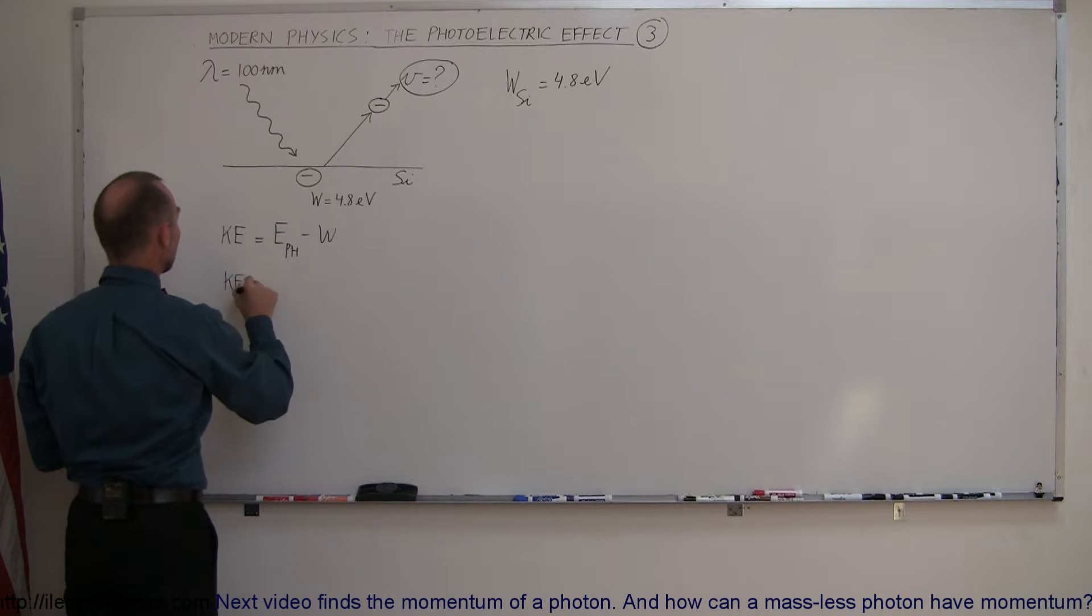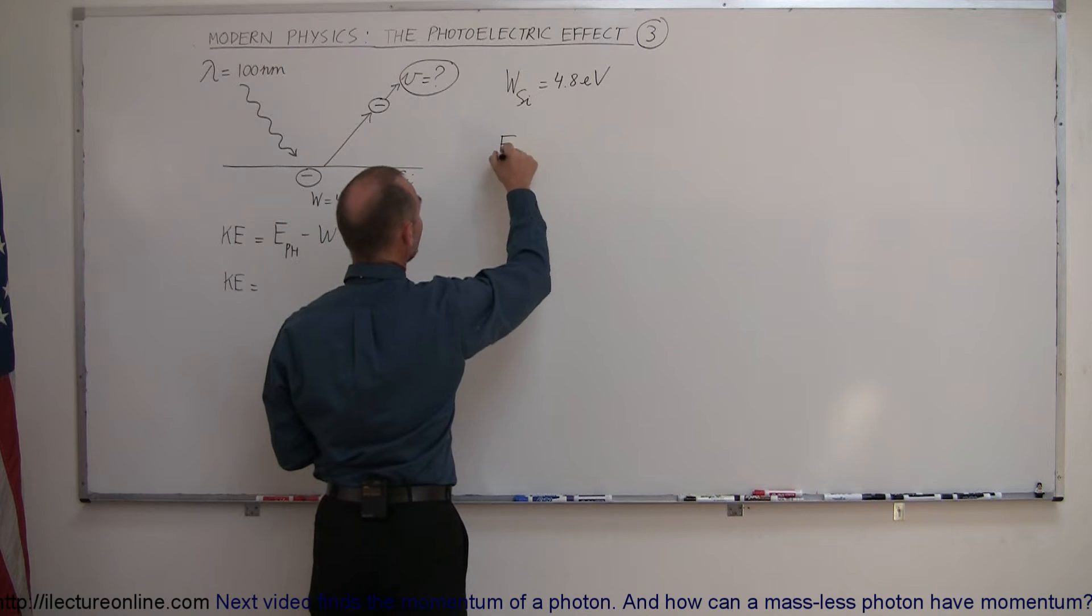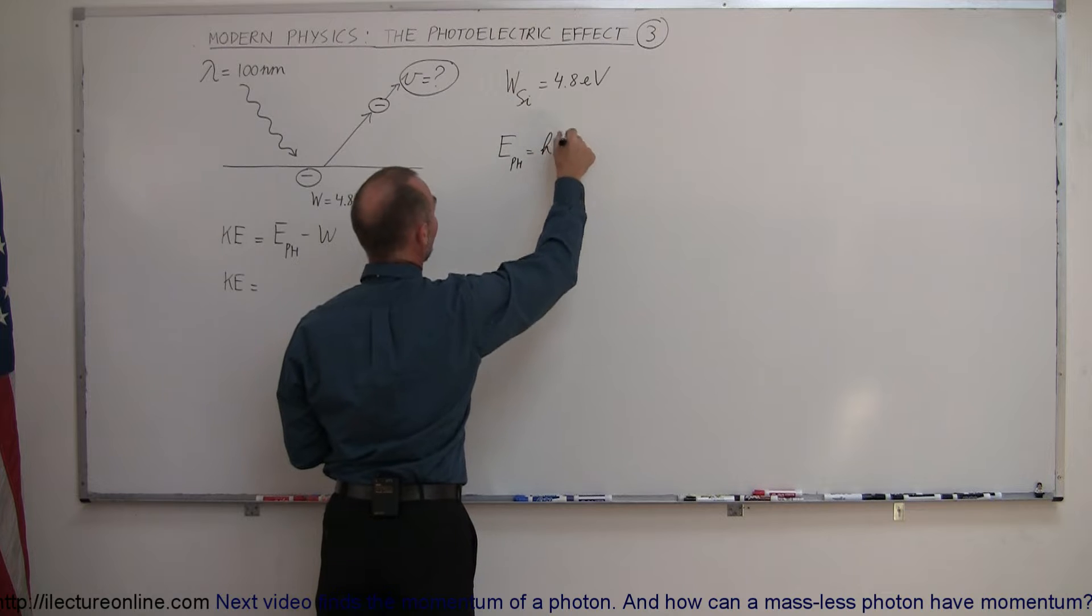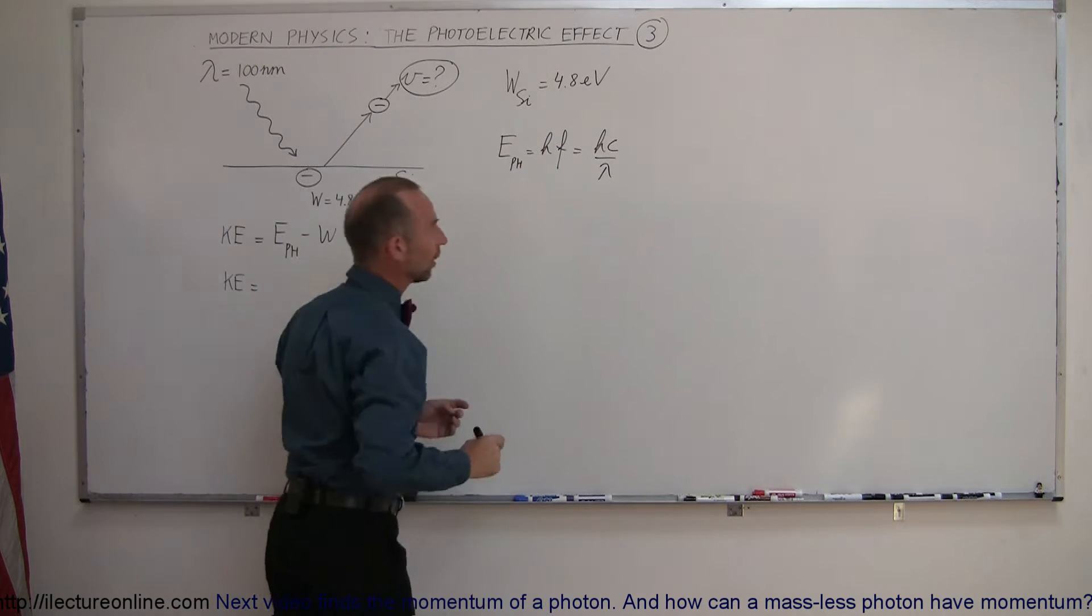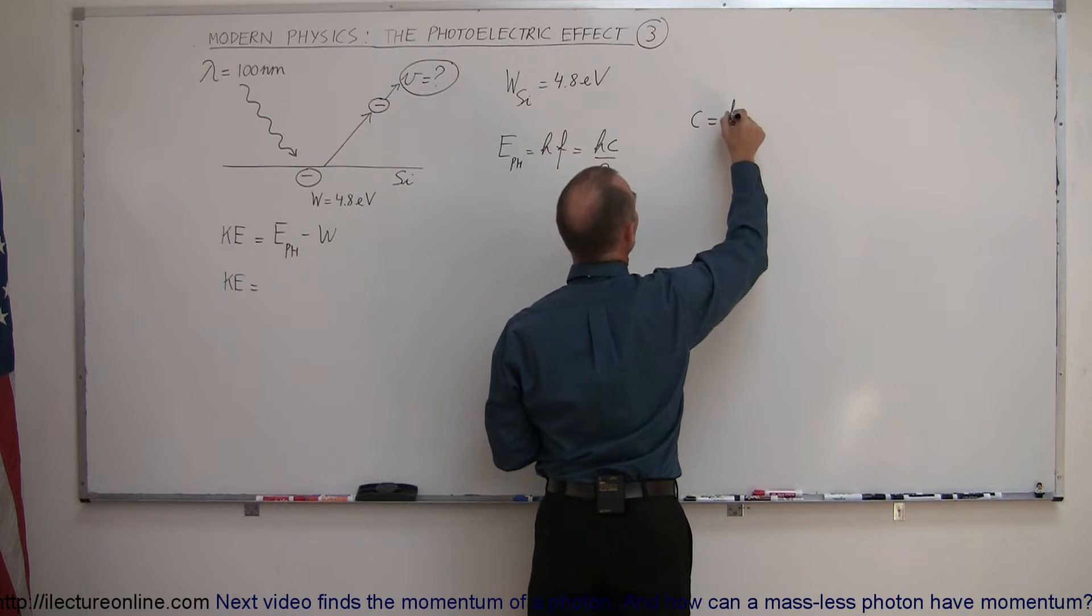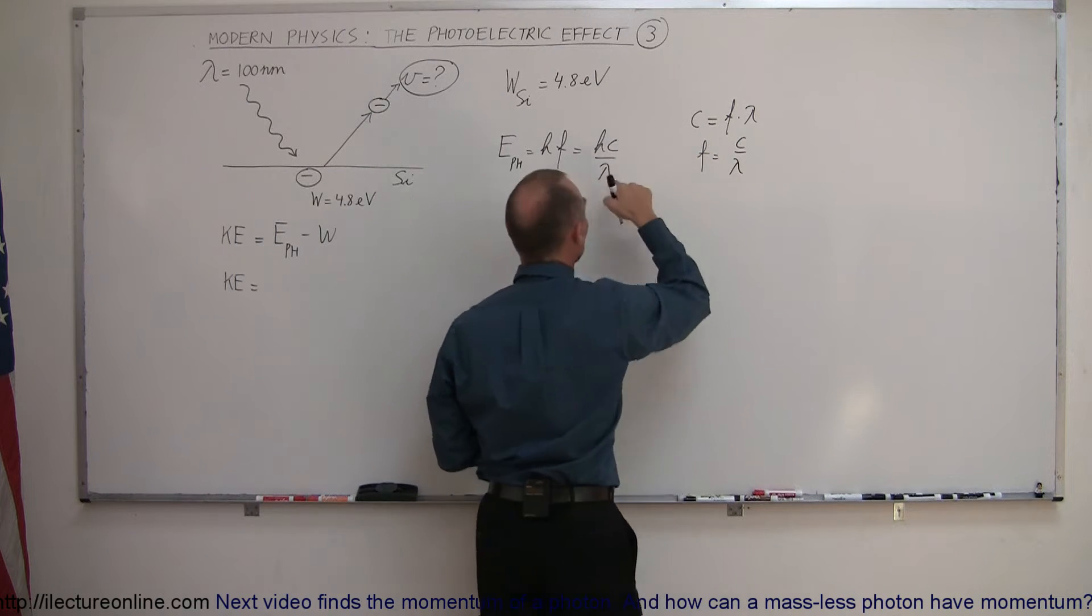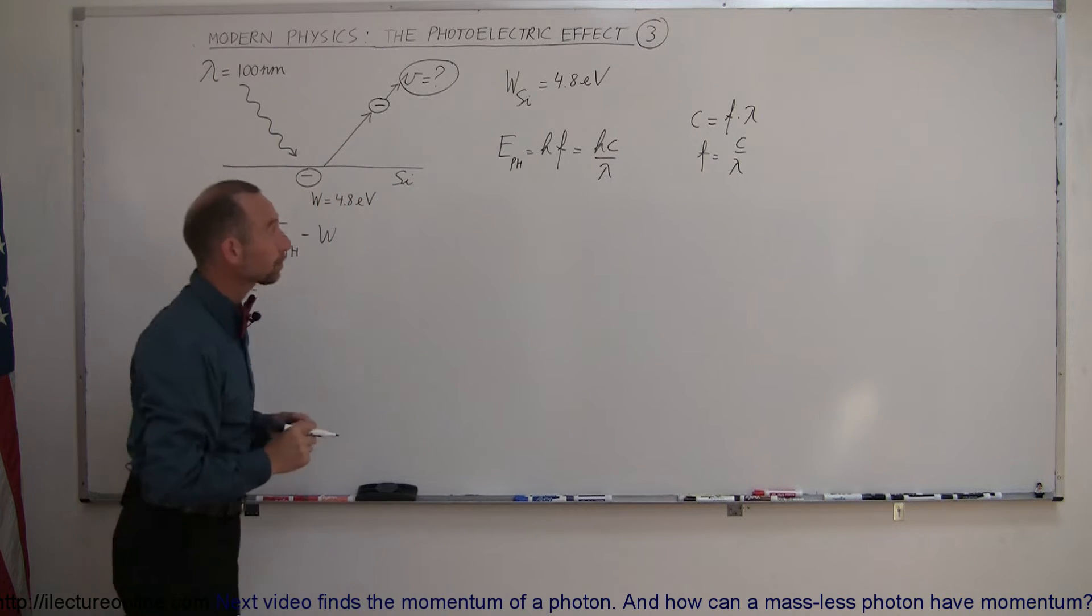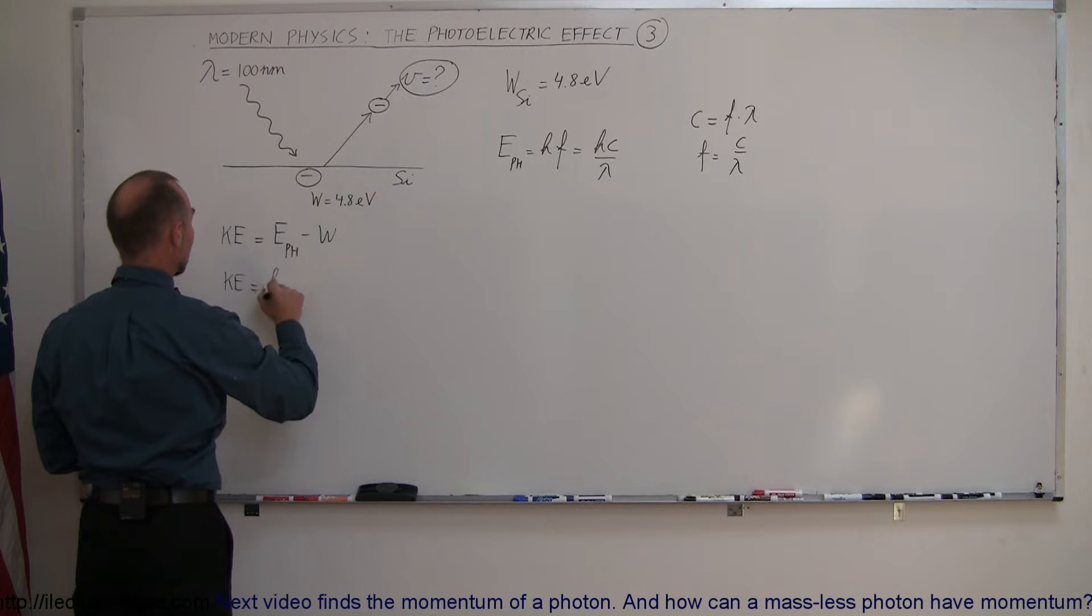So the kinetic energy is equal to the energy of the photon. Again, the energy of a photon can be calculated by saying it's equal to Planck's constant times the frequency, which is the same as hc over lambda. Of course, hc over lambda, that comes from the speed of light equal to the frequency times the wavelength. So here we can say that the frequency can be written as c over lambda. So instead of writing frequency, we can write c over lambda. Plugging that in here, we can then say this is equal to hc over lambda minus the work function.